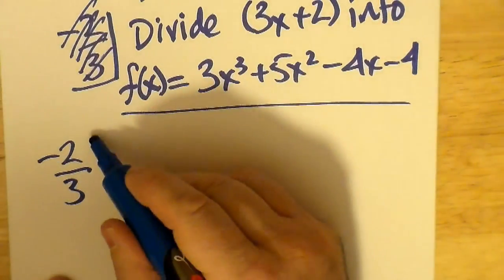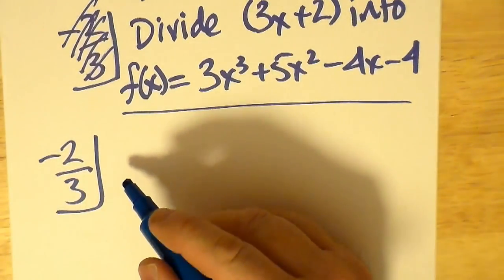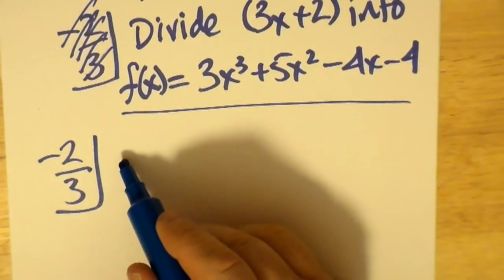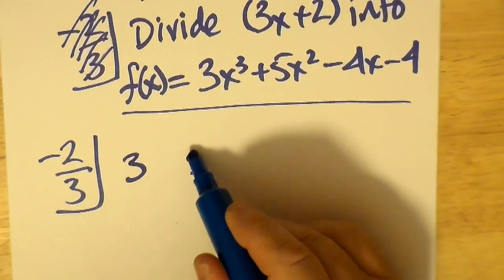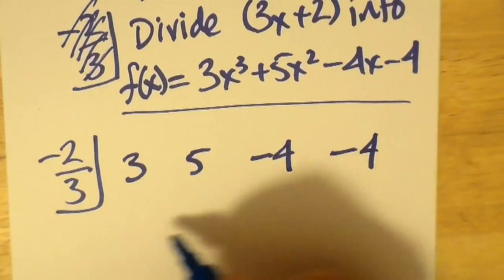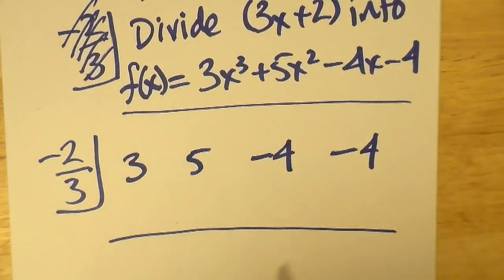I'm going to do this using synthetic division. So I'll use the zero of 3x plus 2, which is negative 2/3. And as in short division, I'm just going to use the coefficients of the polynomial.